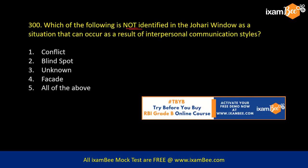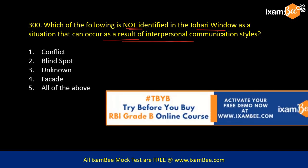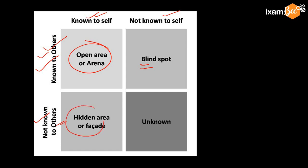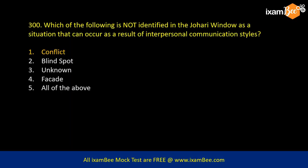Which of the following is NOT identified in the Johari Window as a situation that can occur as a result of interpersonal communication style? The Johari Window has four quadrants: things known to self and known to others is the Open Area; things known to others but not known to self is the Blind Spot; things known to self but not known to others is the Hidden Area; and things unknown to both parties is the Unknown area. The correct answer — meaning what is NOT in the Johari Window — is conflict.